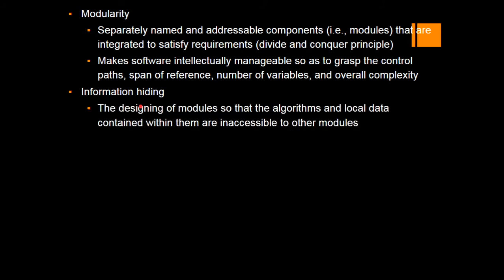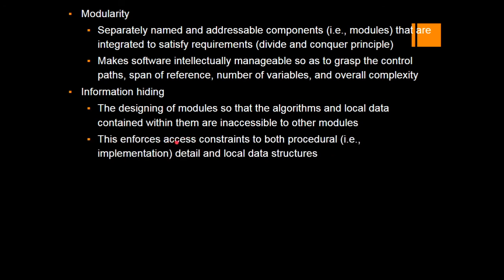Next is information hiding, an OOP concept where modules are designed so that the algorithms and local data contained within them are inaccessible to other modules. Information is only available within one module; other modules can send or receive data but cannot access each other's internal content. This enforces access constraints to both procedural detail and local data structures, preventing one module from breaching the constraints of another.